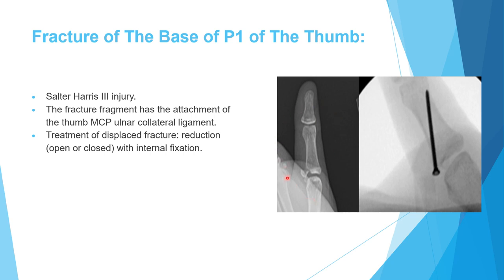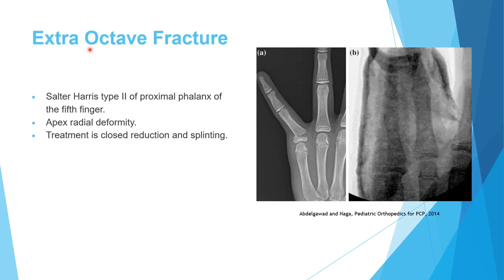Fracture of the base of the first phalanx of the thumb: you can see this fragment of bone which has the attachment of the ulnar collateral ligament of the metacarpophalangeal joint — essentially a bony ulnar collateral ligament injury. It requires fixation by open reduction internal fixation with a compression screw to avoid instability. Anatomical reduction and screw fixation are needed.